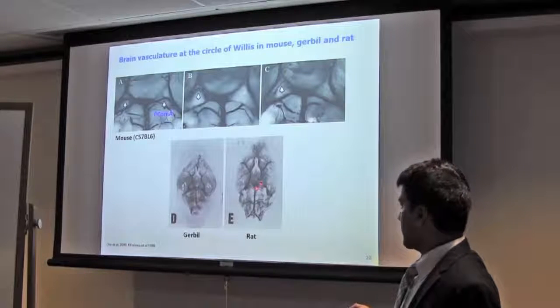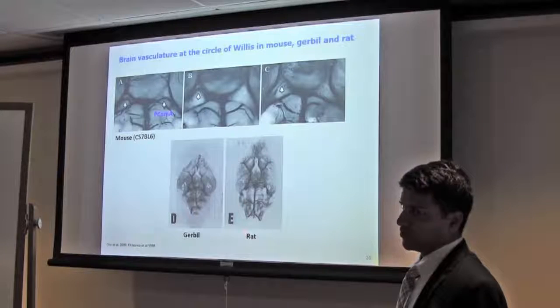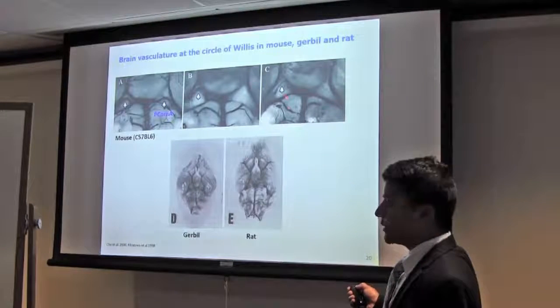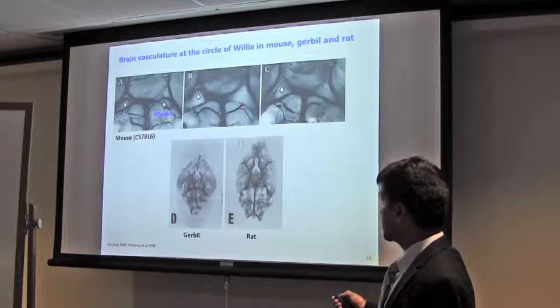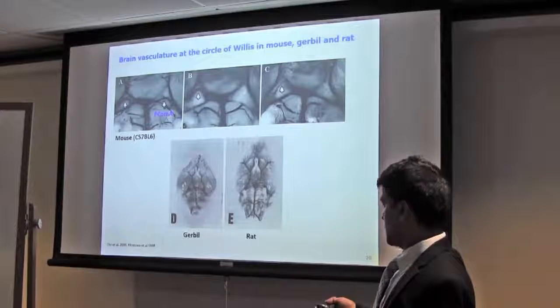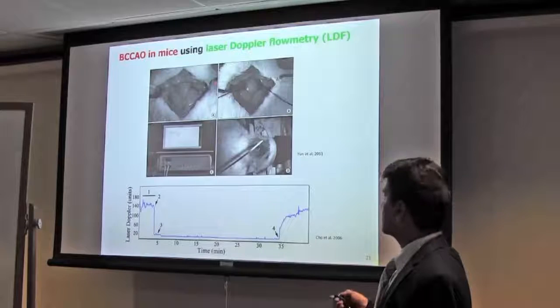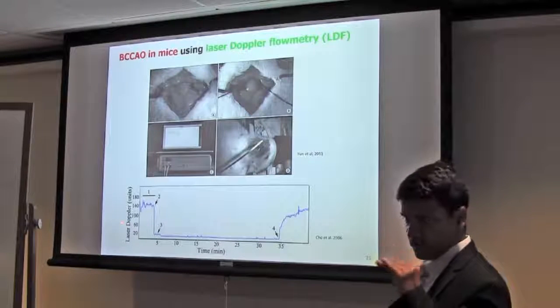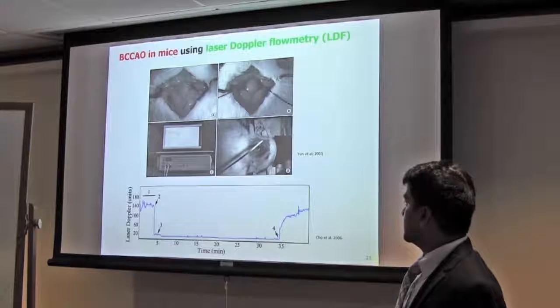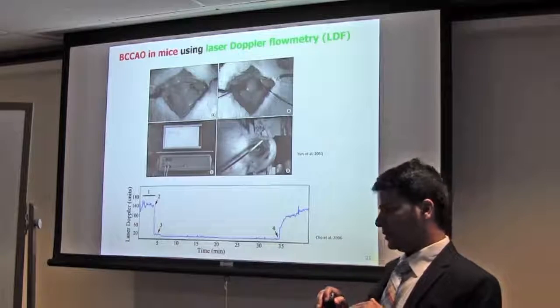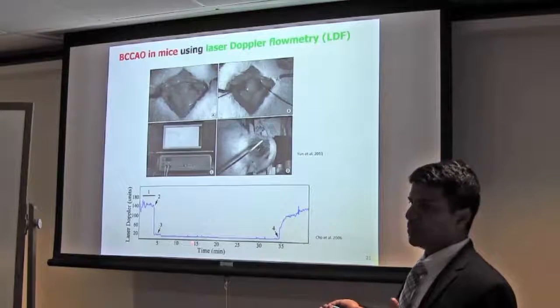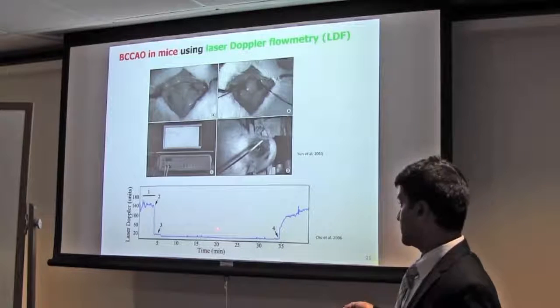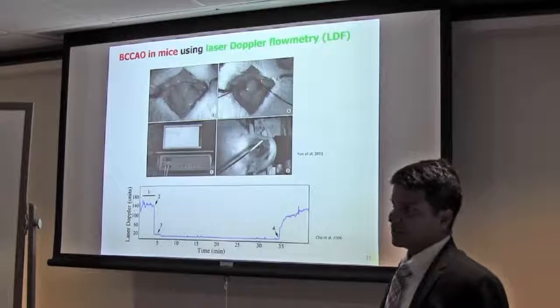In case of rat, circle of Willis is well established, so only 2VO is not good in rats. But in mice, mainly for C57BL6 mice, the PCOM is variable. In some cases, it is absent in both. In some cases, absent unilaterally, but in some cases, present in both sides. When you apply laser Doppler flowmetry and then occlude the two vessels in mice, you can see immediately whether blood is reduced, so your model is good. When blood supply reduction is more than 90% in case of 2VO, people say this model will be okay, this animal can be used. But when there is like 70% reduction, it is not that good, so you can discard that animal.